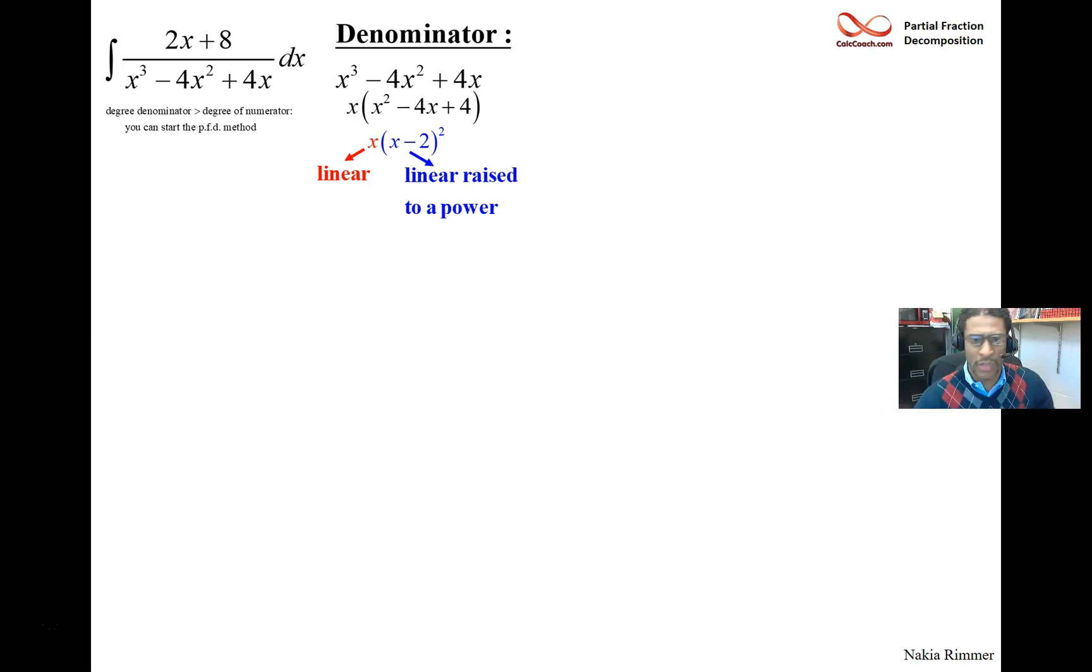When we go to decompose, what needs to happen is the linear factor will get its own fraction, so we'll have some constant over the linear factor. But then when it comes to a linear factor that's raised to a power, what we need is that power and all powers lower than it down to the first power. So not only do we need a fraction for x minus 2 squared with a constant up top, we also need a fraction of x minus 2 to the first power.